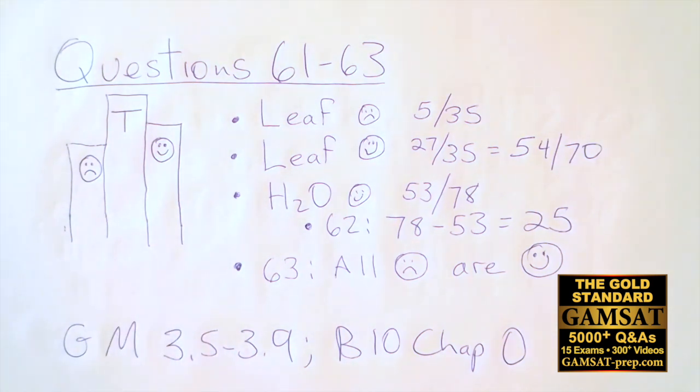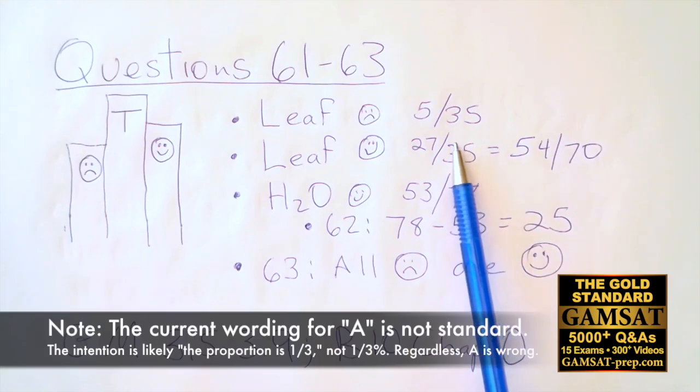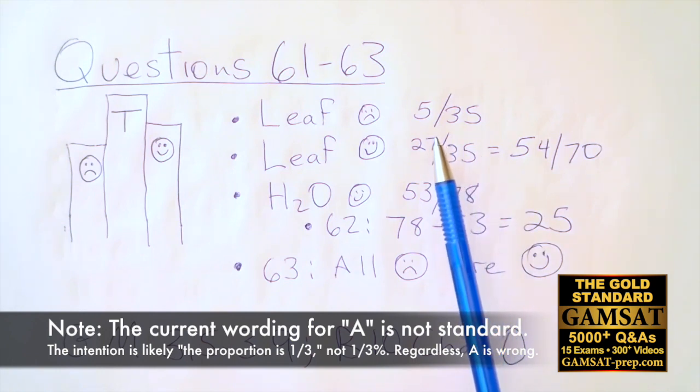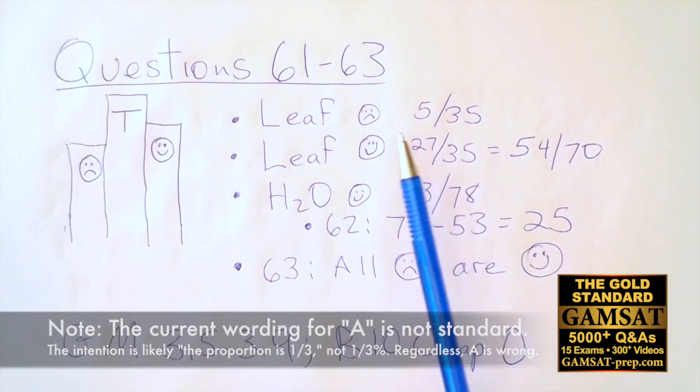We have the setup, and now for the first question, 61. According to the data, dried leaf - we're looking at the advantage of dried leaf over a water extract. Answer choice A says the percentage of patients with side effects was about a third. We can take a look at the percentages of patients with side effects for leaf, and we see that it's 5 out of 35, so 35 being the total amount and 5 is the amount with the side effects. You can see that that's nowhere near a third. A third would have been 11 or 12 out of 35.